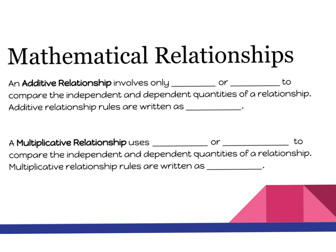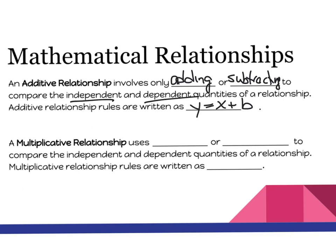An additive relationship involves only adding or subtracting to compare the independent and dependent quantities of a relationship. Additive relationship rules are written as y equals x plus b. Make sure you remember that — when it's an additive relationship, you write the equation as y equals x plus b.